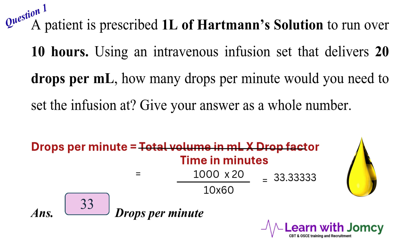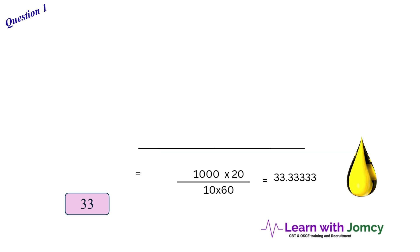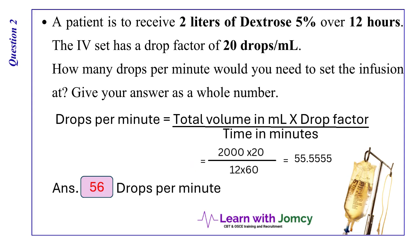So the correct answer is 33. We have to give our answer as a whole number, so the answer is 33 drops per minute. The formula is: drops per minute equals total volume in milliliters multiplied by the drop factor, divided by time in minutes.